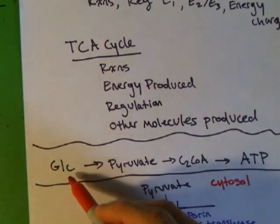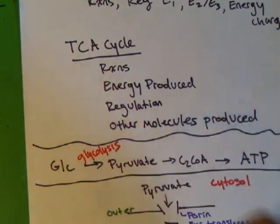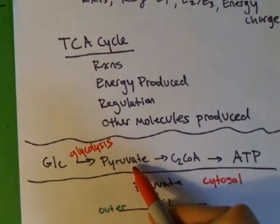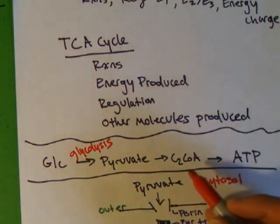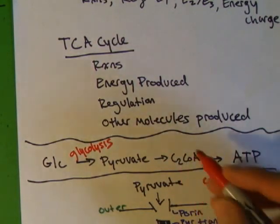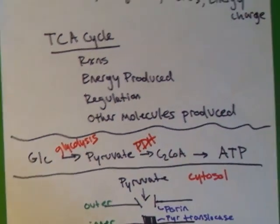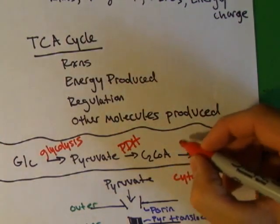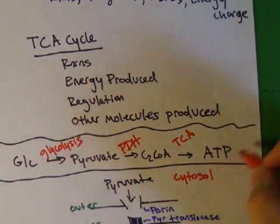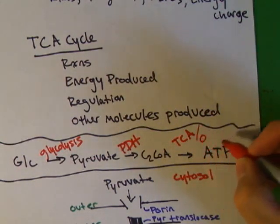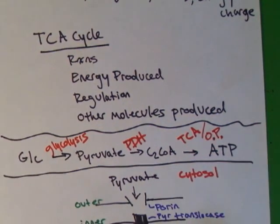So far, we've gone from glucose to pyruvate, and that was in glycolysis. We're going to go from pyruvate to acetyl-CoA, which I'm always going to write down as C2-CoA. It's a nice reminder that there's two carbons in it. So that's via the PDH complex. And then from acetyl-CoA to ATP, which is the Krebs cycle, or the citric acid cycle, mixed with oxidative phosphorylation, which is unit six. We'll talk about that in the next video.